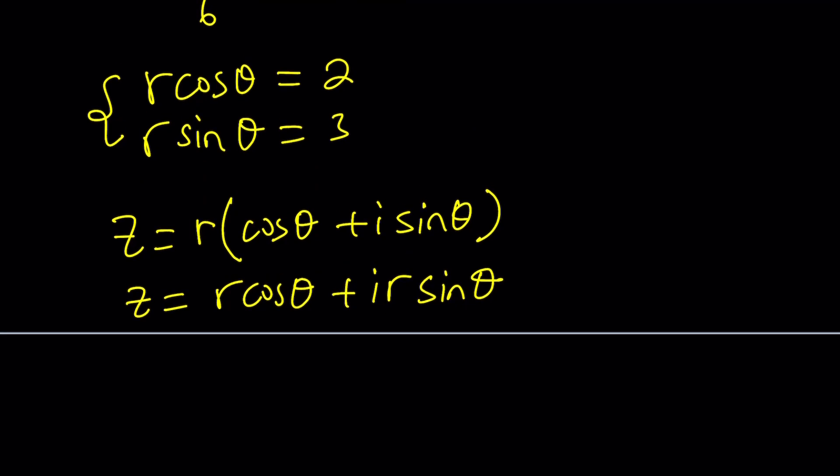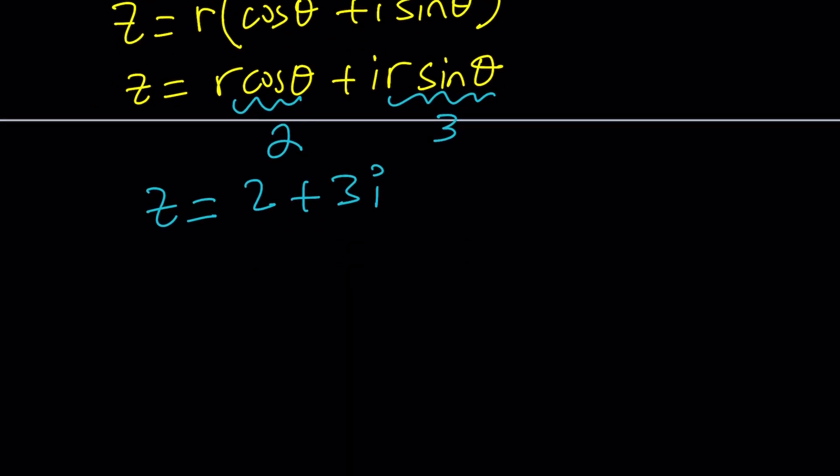And now we do know that r cosine theta is equal to 2. So this is going to become 2. And r sine theta is equal to 3. And that's going to be a 3. Therefore, Z is going to be 2 plus 3i as before. Obviously, that should give you the same answer. So before we conclude the video, let's go ahead and take a look at if we could use the Euler's formula for this one.